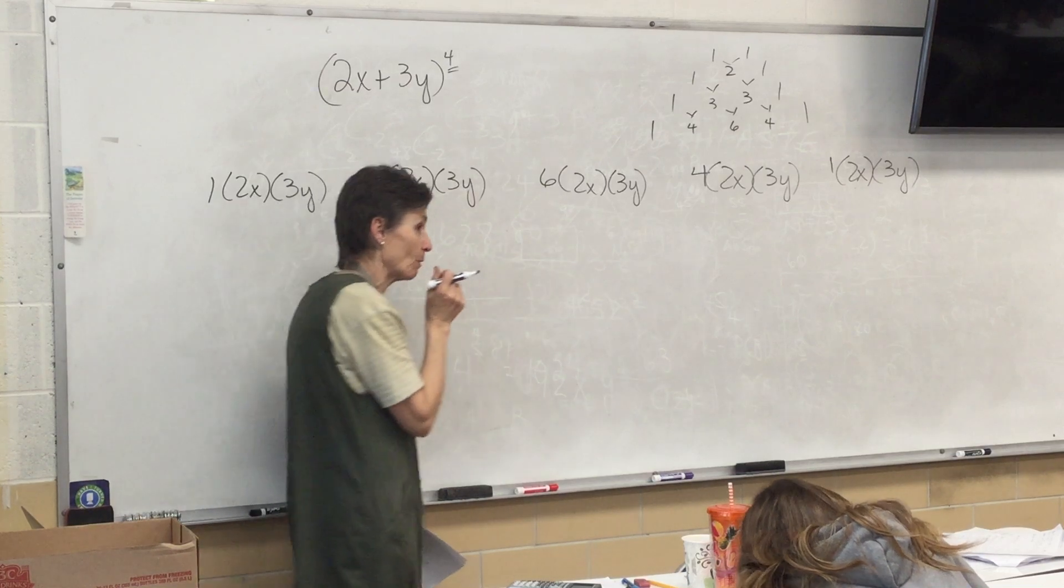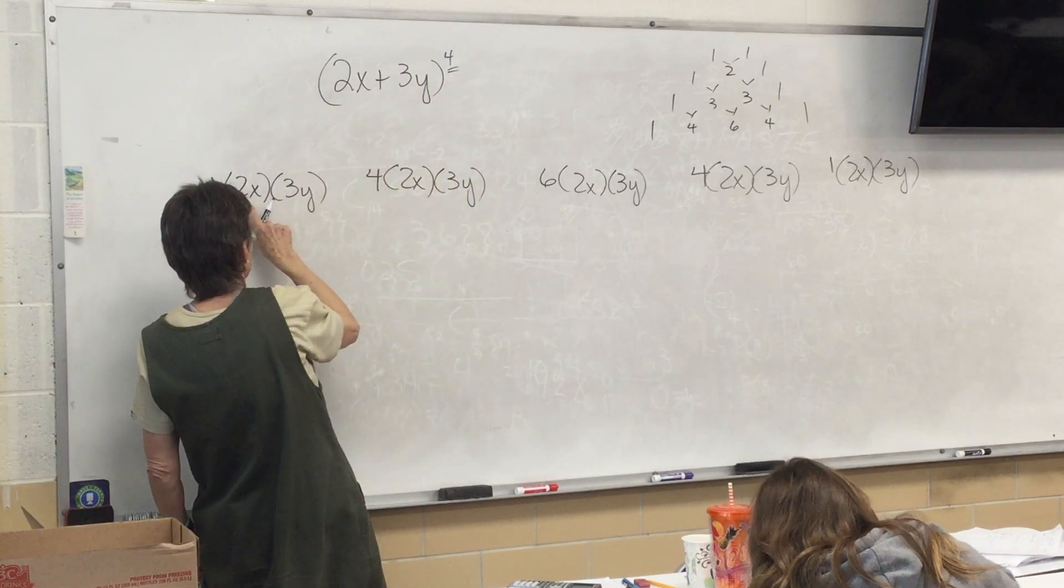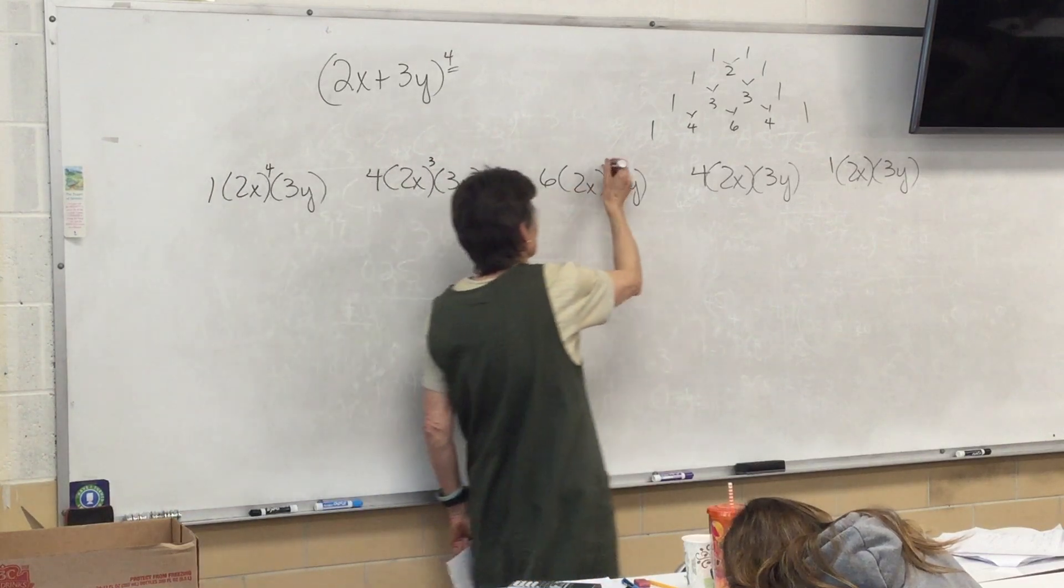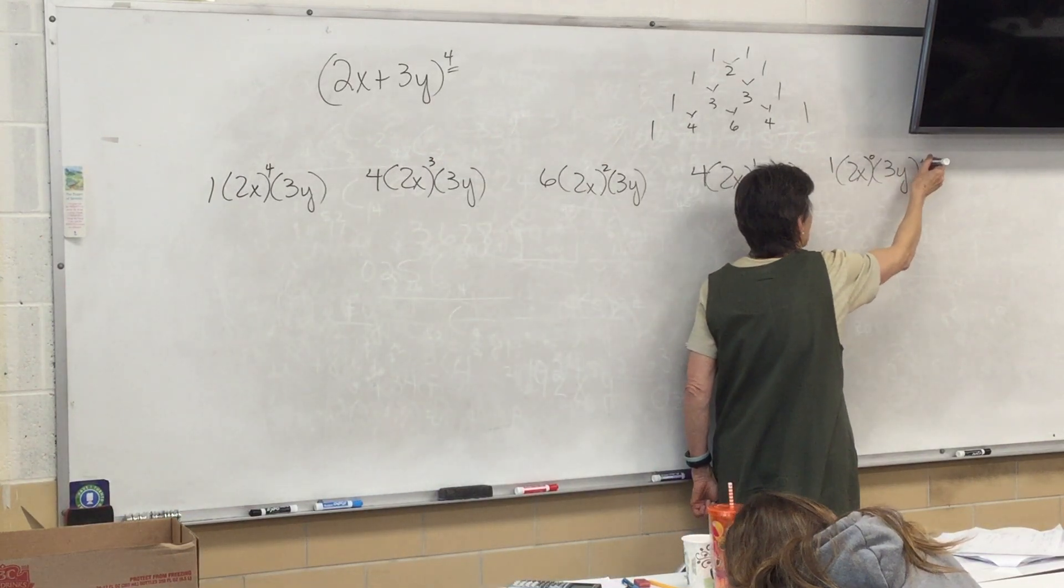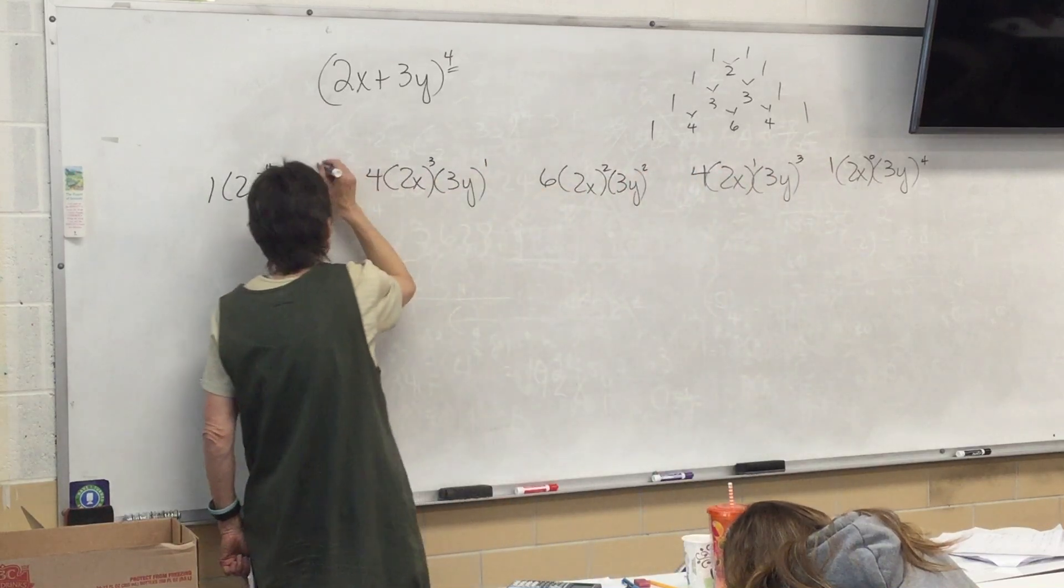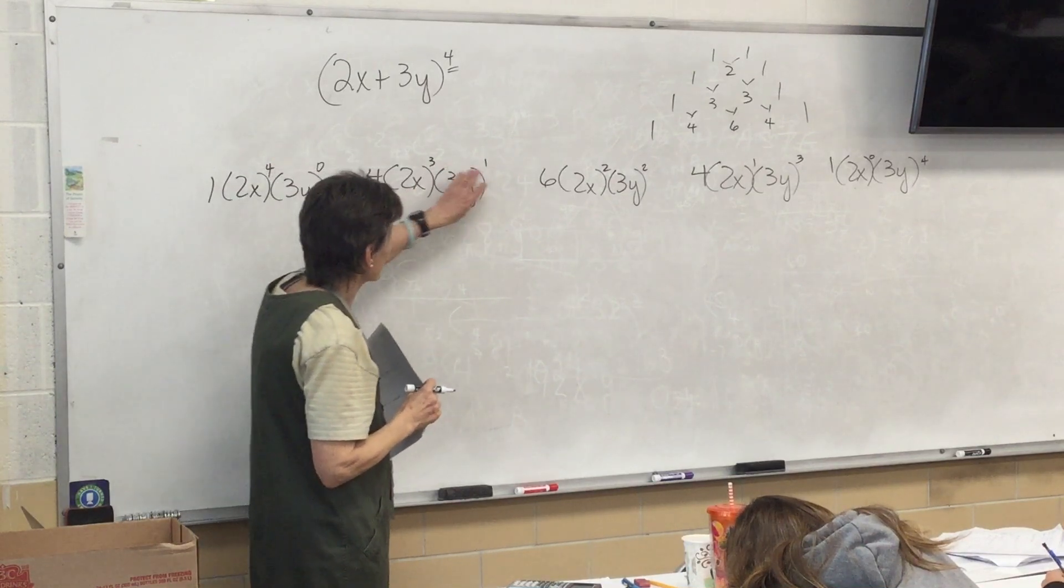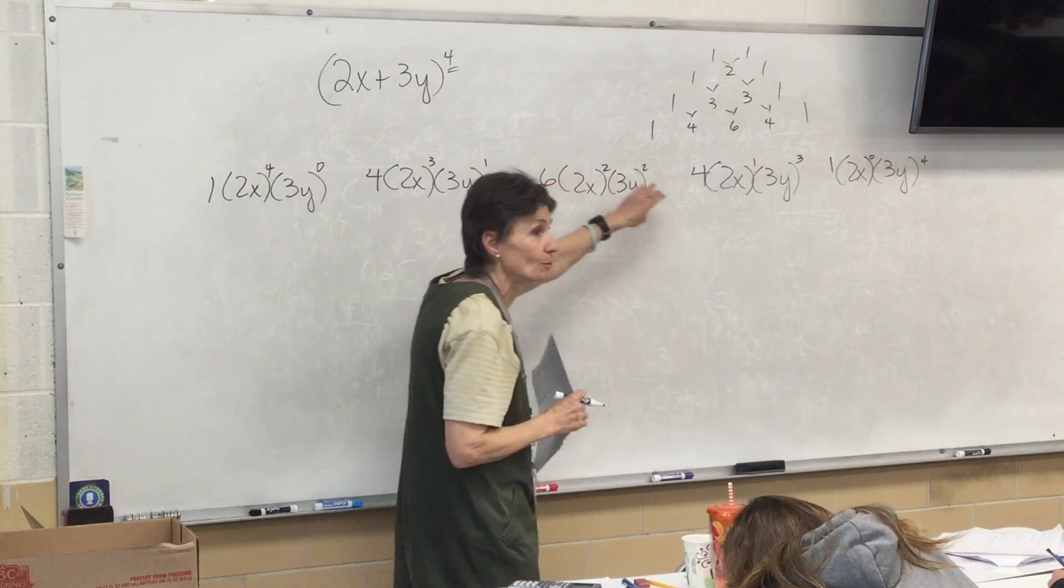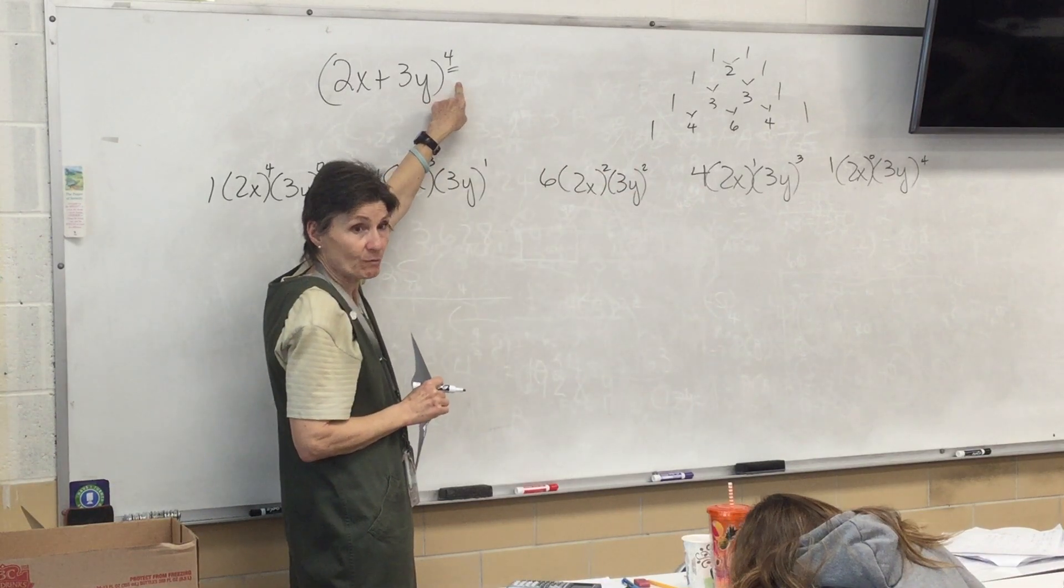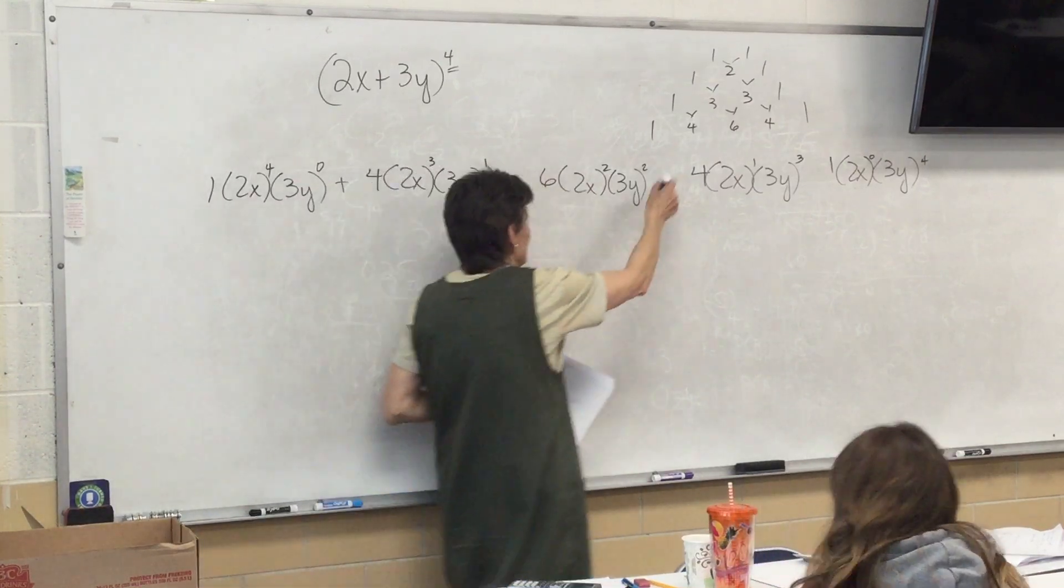Now what happens? Now, I've got to put on the powers. And because that's a 4, I'm going to start right here on the first one, the 2x. I'm just going to get a 4. 3, 2, 1, 0. And then on the 3y: 0, 1, 2, 3, 4. And what's my little check? I'm going to eyeball it as I'm doing it. The exponents have to add up to whatever that is. In this case, 4.